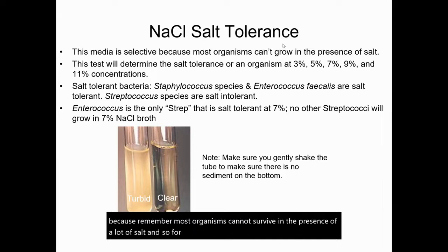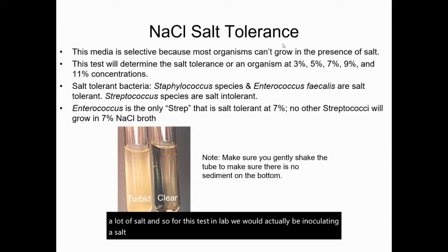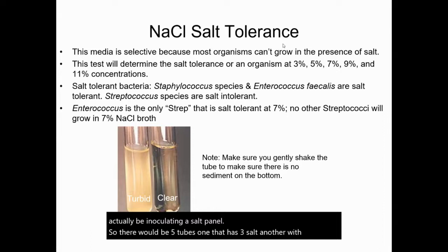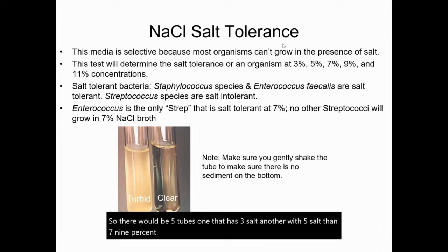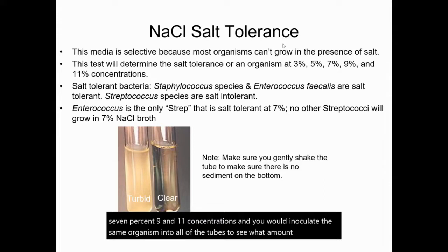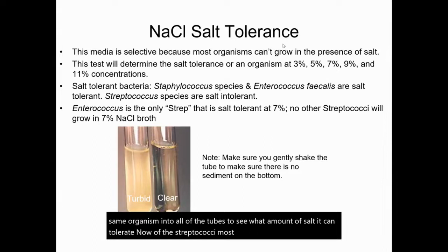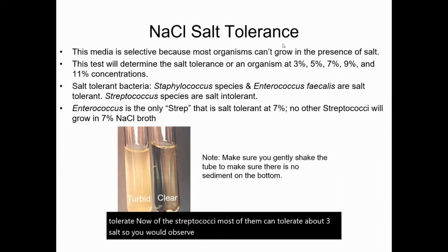For this test in lab, we would be inoculating a salt panel. There would be five tubes: one with 3% salt, another with 5% salt, then 7%, 9%, and 11% concentrations. You would inoculate the same organism into all of the tubes to see what amount of salt it can tolerate. Of the streptococci, most of them can tolerate about 3% salt, so you would observe turbidity or growth in the 3% tube, but after that most streptococci cannot grow.